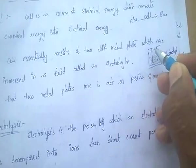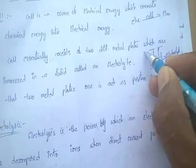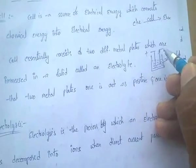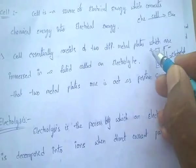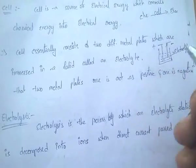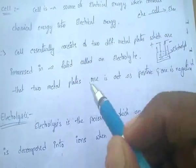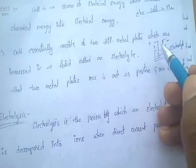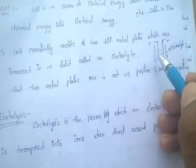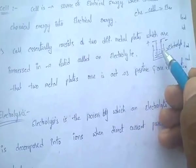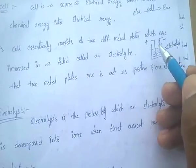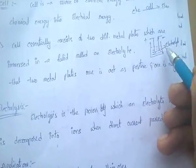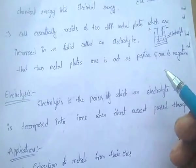One plate acts as a positive electrode and one plate acts as a negative electrode — that means it is the anode, and the other is the cathode. So a cell essentially consists of two different metal plates immersed in a fluid called the electrolyte.